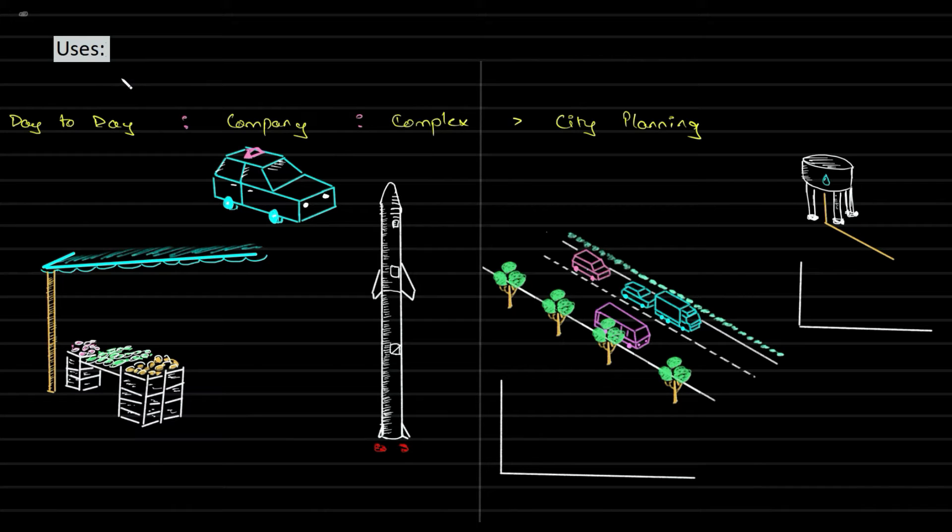Now the fun part - we're looking at the uses. Polynomials are used in day-to-day stuff, companies use it, and in complex things also. When you want to buy fruits and vegetables, the math you do in your head is also polynomial. The machines that calculate the amount you have to pay use polynomials - they're fed with a particular expression, work it out, and give you the amount.